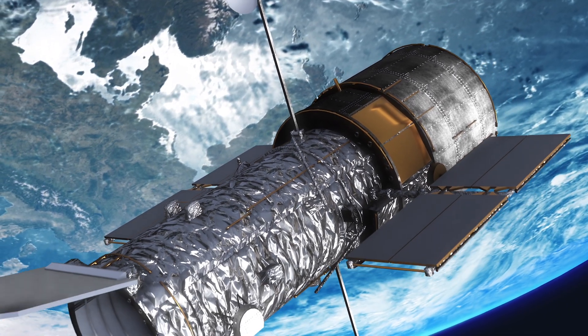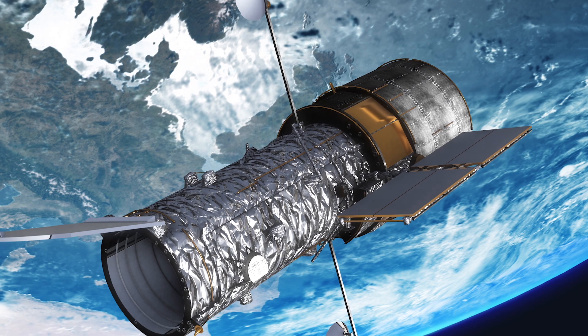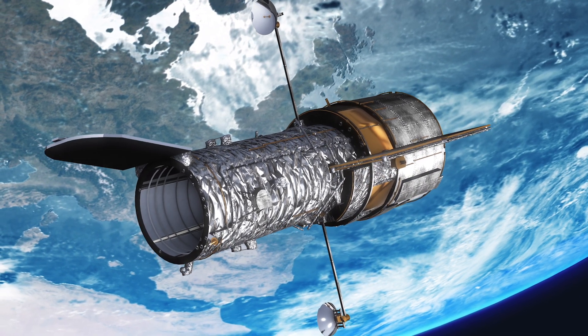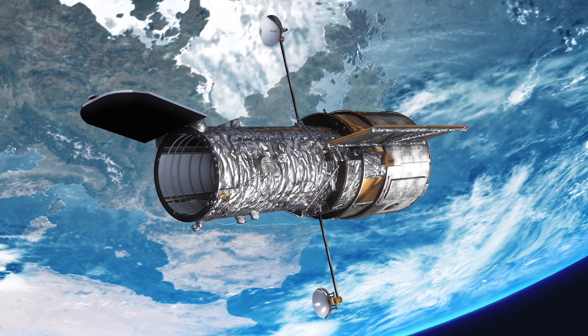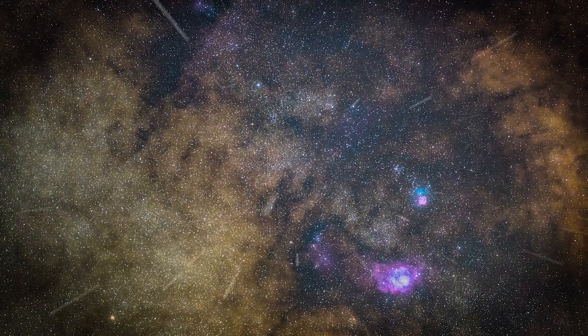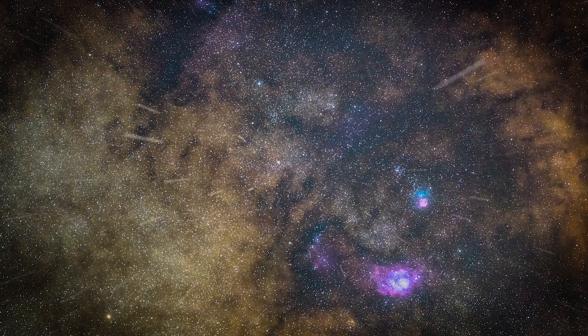The Voyager probes used a clever trick called gravitational assist, harnessing the gravity of giant planets like Jupiter and Saturn to get slingshot boosts, gaining speed without extra fuel. This works because, in physics, energy is conserved.